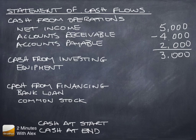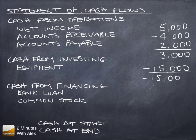We spent $15,000 on a piece of equipment, so that's cash going out. Total cash from investing is minus $15,000.